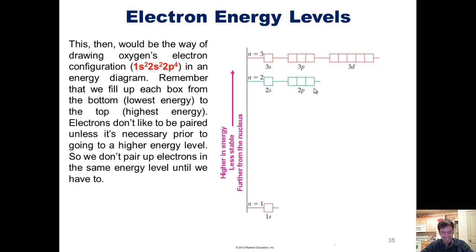Electrons don't like to be paired up unless it's necessary in order to avoid going to a higher energy level. So we don't pair up electrons in the same energy level until we have to. So let's see if we can fill these up for oxygen. Oxygen has two electrons in its 1s orbital, so I fill them up. One has a plus 1/2 spin. One has a minus 1/2 spin. Now oxygen's next electrons are in its 2s orbital. It's going to have one as a plus 1/2 spin, and one as a minus 1/2 spin. Now it has four electrons in its 2p orbital, and they're going to first occupy the 2p orbital completely unpaired, so one, two, three.